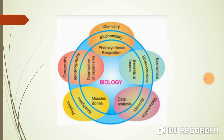Whenever any scientific study is carried out, experiments are done. When experiments are done, mathematics becomes involved because a lot of data comes in. We have to analyze that data with the help of biomathematics and biometrics. A branch of maths is statistics, and we have to do statistical analysis with data related to biology.